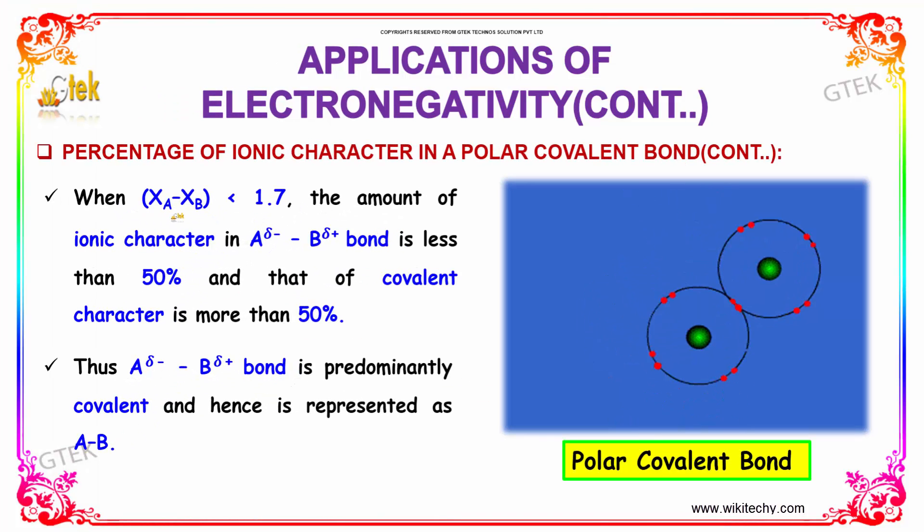When xA minus xB is less than 1.7, the amount of ionic character in A delta minus B delta plus bond is less than 50% and that of covalent character is more than 50%. So the A delta minus B delta plus bond is predominantly covalent and is represented as AB.